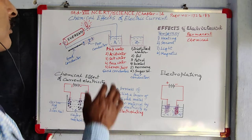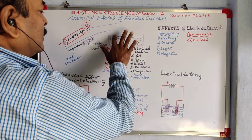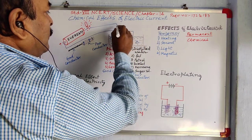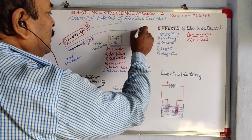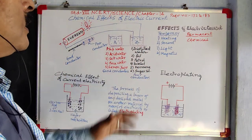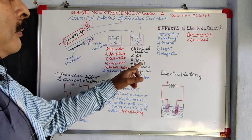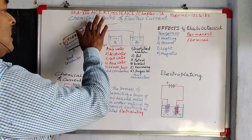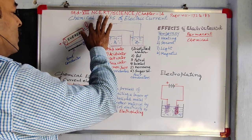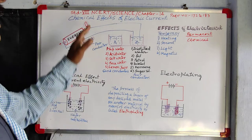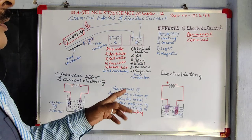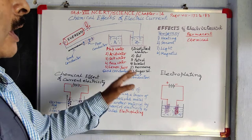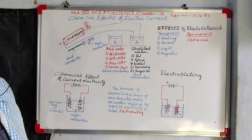But if we remove this connection and put it into the pot B — which contains distilled water, oil, petrol, diesel, kerosene, or sugar solution — we can see the LED remains off. It is not glowing. These solutions are not allowing electricity to pass through them, so we can call all these solutions poor conductors.